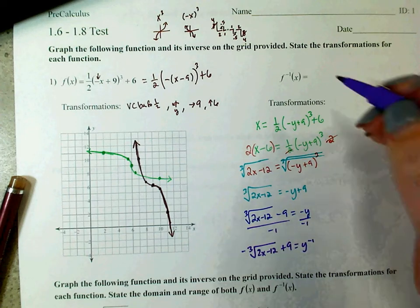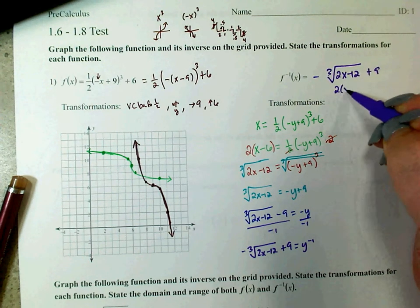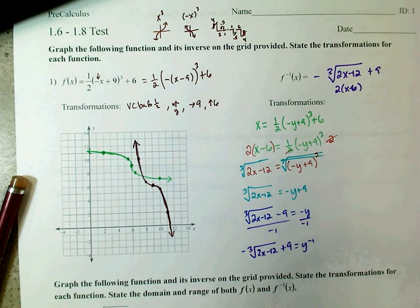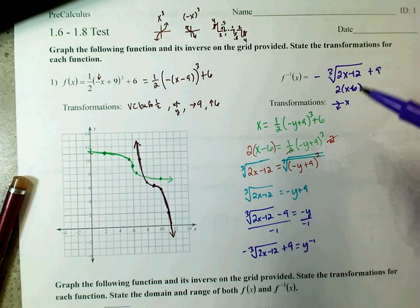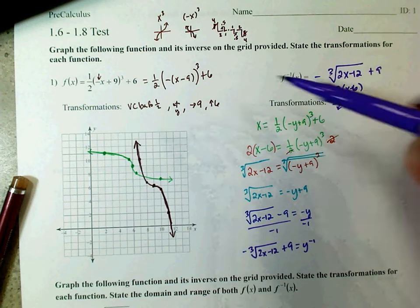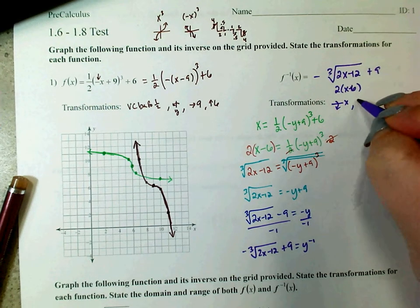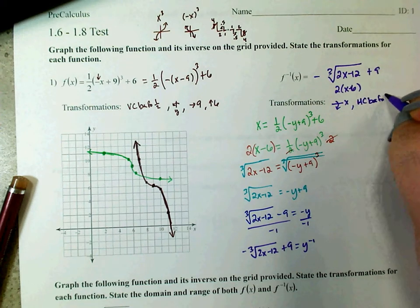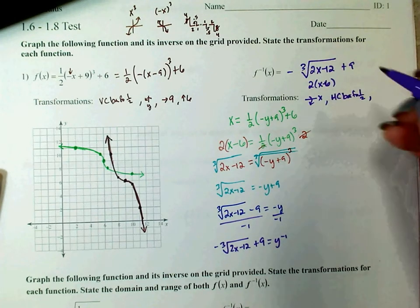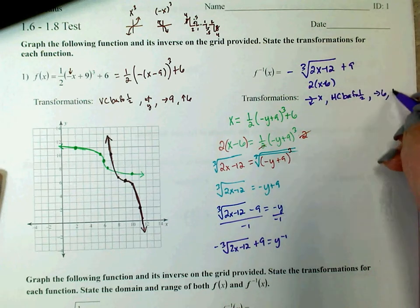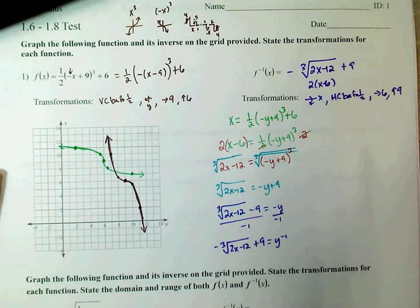So my inverse is the negative cube root of (2x minus 12) plus 9. I'll write below it: 2 times (x minus 6) — this is a reminder of my transformations. A negative on the outside is a flip over the x-axis. Remember, x and y switch, so if this was a flip over y in the original, it's a flip over x in the inverse. The 2 on the inside — opposite of what you think — is a horizontal compression by a factor of one half, just like the original had a vertical compression by a factor of one half.